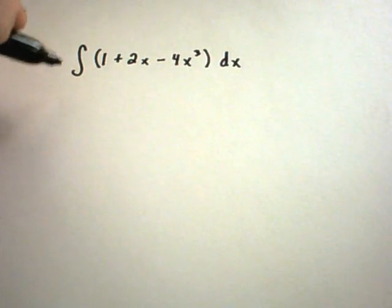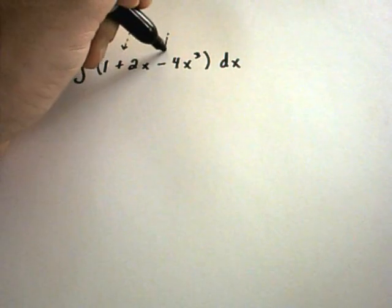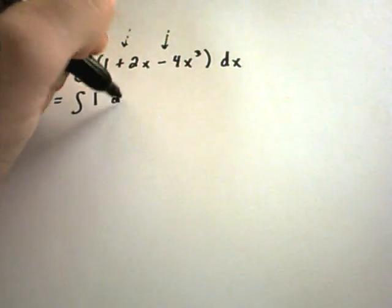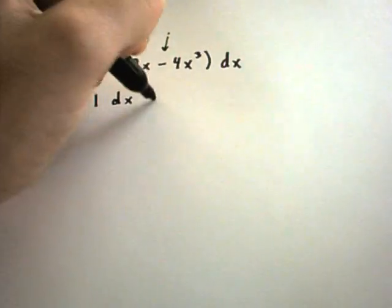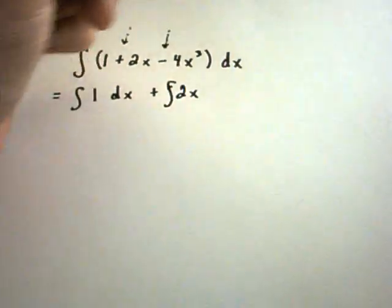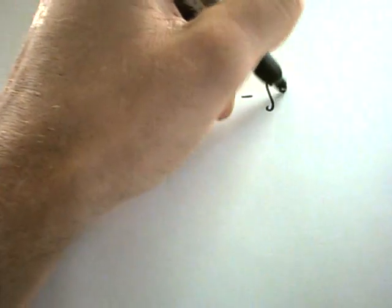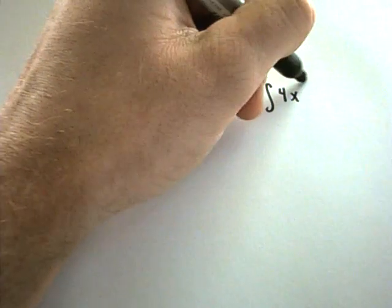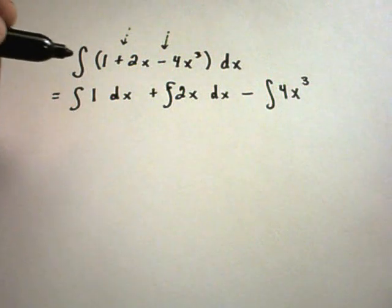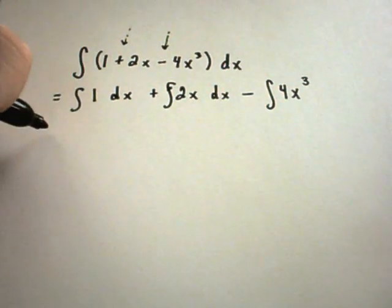Suppose we want to integrate 1 plus 2x minus 4x to the third. When there are pluses or minuses between your terms you can basically integrate them a piece at a time — it's kind of like you're distributing the integral sign to each piece.